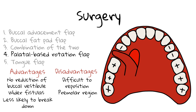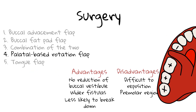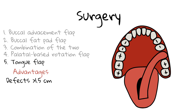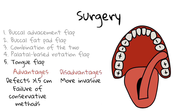If the palatal rotation flap is extended into the molar region, excessive tension may cause occlusion of the greater palatine artery and ischemia of the flap. The tongue flap involves raising a pedicle flap on the tongue and suturing it to the OAC. It is reserved for defects greater than 1.5 centimeters in which conservative methods have failed. The success of this flap is largely due to the rich blood supply of the tongue. It is used rarely because it is more invasive compared to the other flaps.